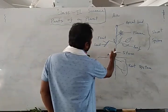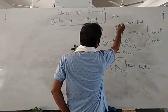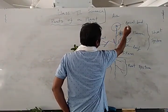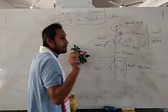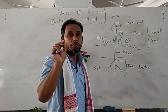The plant is growing upward. This particular growing point at the top is called the apical bud.